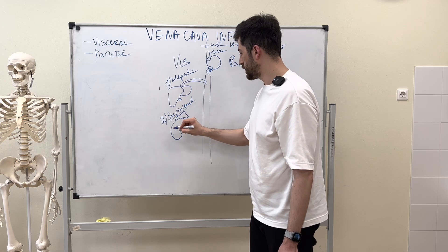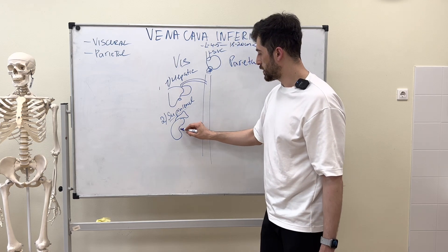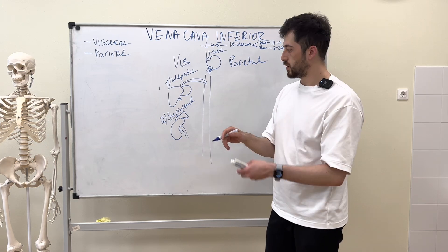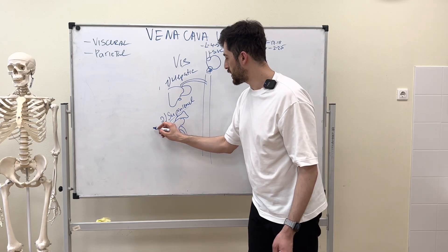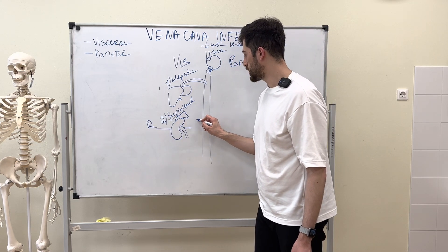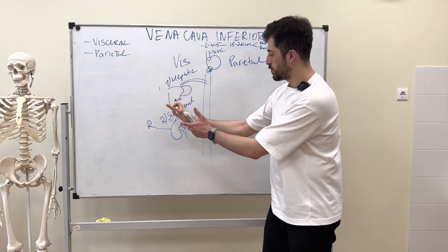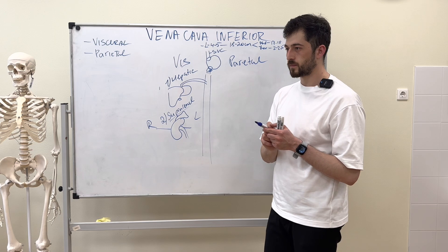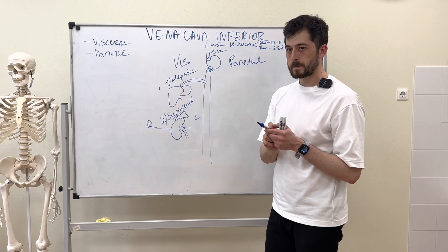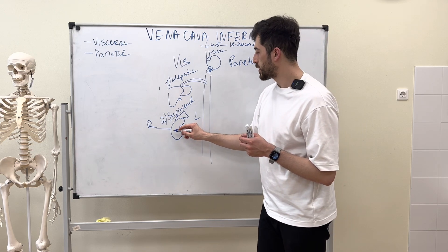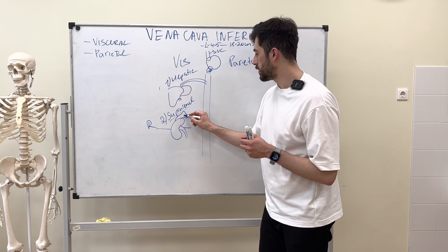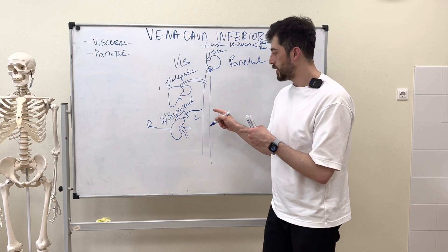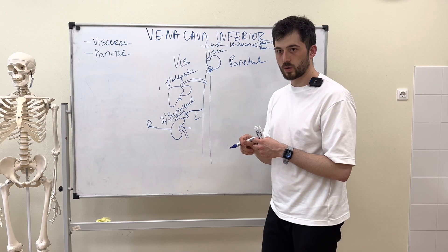The next visceral tributary is the suprarenal vein — from the suprarenal gland located in the upper part of the kidneys. There is an important difference between the right and left sides: the right suprarenal vein drains directly into the inferior vena cava.